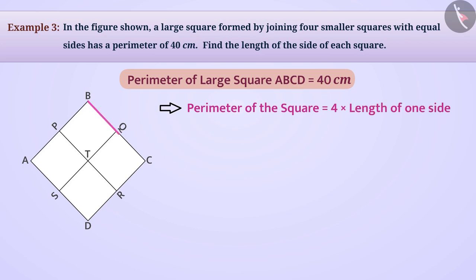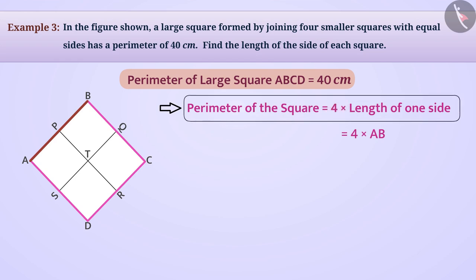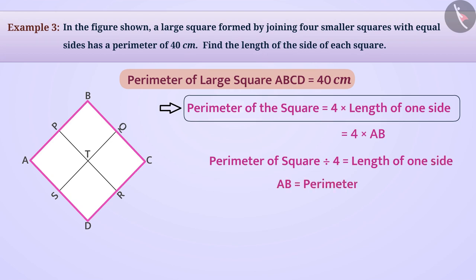That is, the perimeter of square ABCD is equal to 4 multiplied by AB. Since multiplying the length of one side by 4 gives the perimeter, dividing the perimeter by 4 gives the length of one side. So AB equals the perimeter of square ABCD divided by 4, which equals 40 centimetres divided by 4, which equals 10 centimetres.